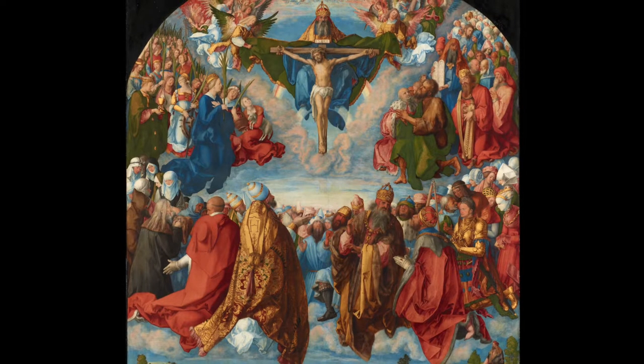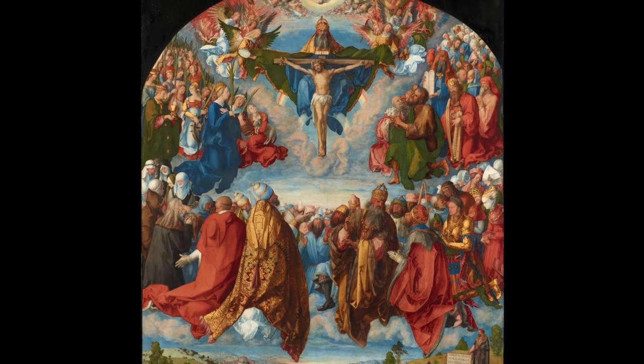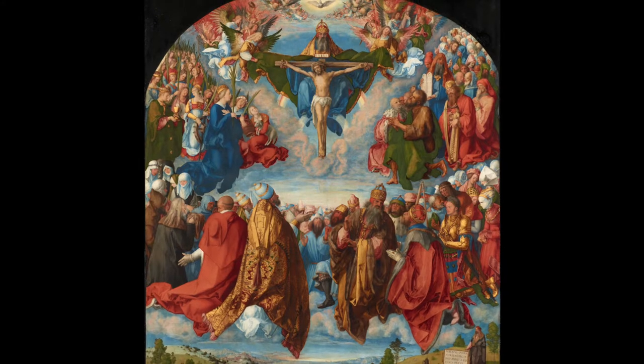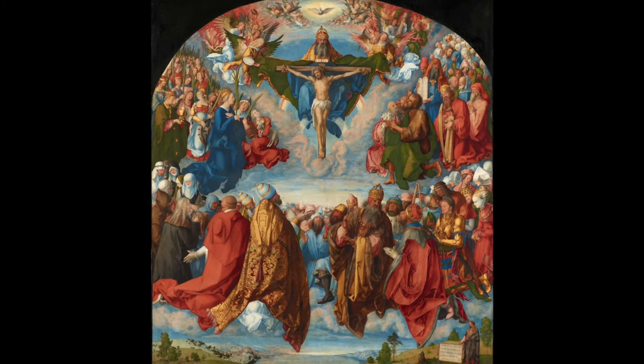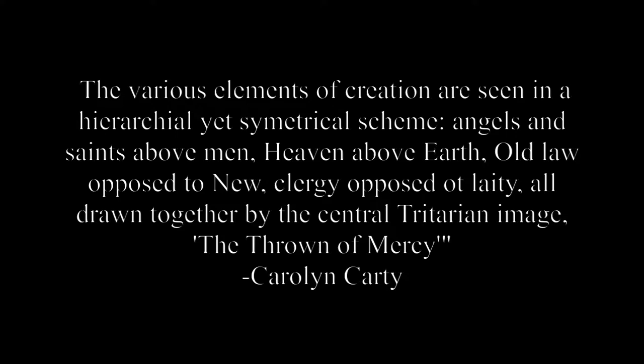You may have noticed that this three-row composition of angelic beings on the top, saints in the middle, and humans on the bottom was also used by Raphael. Carolyn Carty perfectly summarizes this composition: the various elements of creation are seen in a hierarchical yet symmetrical scheme — angels and saints above men, heaven above earth, old law opposed to new, clergy opposed to laity — all drawn together by the central trinitarian image, the throne of mercy.